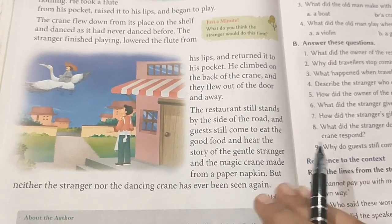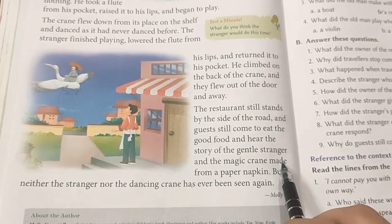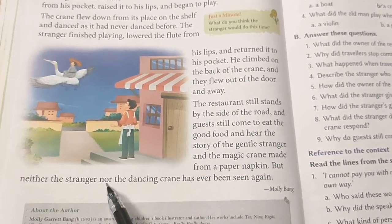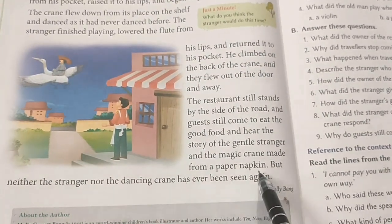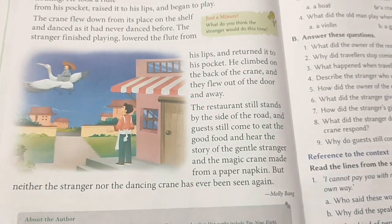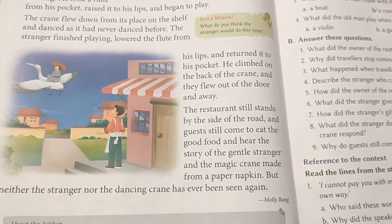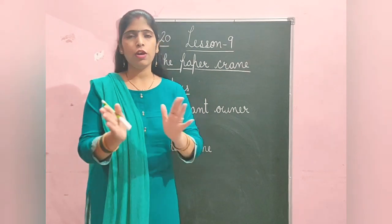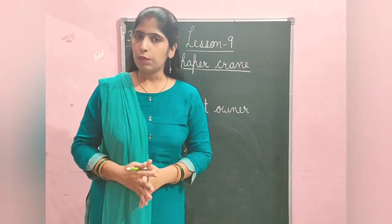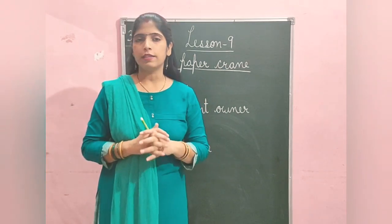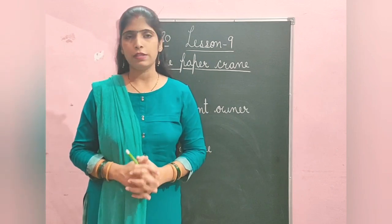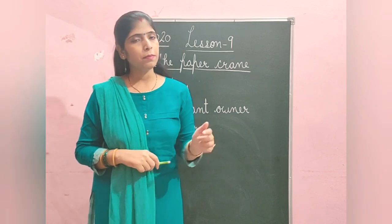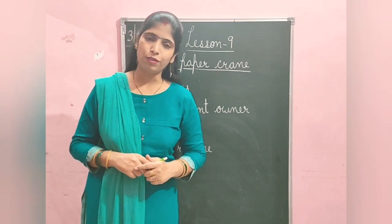'The restaurant still stands by the side of the road and guests still came to eat the good food and hear the story of the gentle stranger.' Though the stranger and the dancing crane were never seen again, the restaurant was always full. Guests came to enjoy the good food made by this good man and to hear the story of the stranger and the magic crane made from a paper napkin. I hope the story is clear to you — read it once again, listen to the video, understand it, and if you have any doubt please clear it. I will be sending you the question answers by the evening. Thank you so much, children.